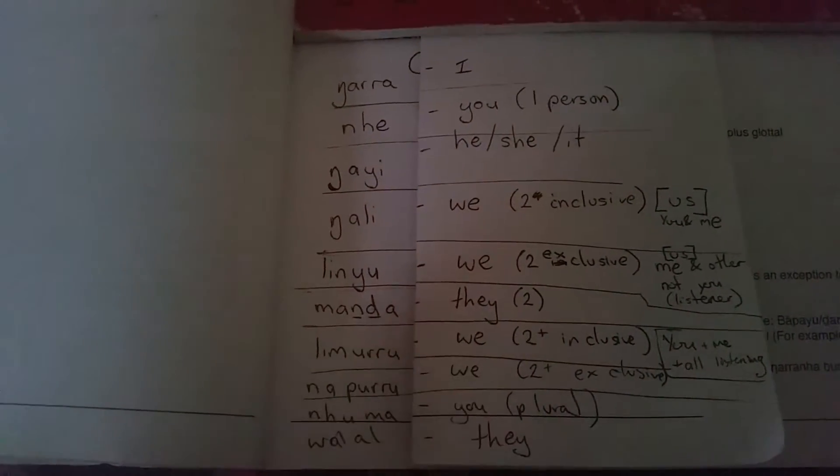So it could be the person standing next to them that you're explaining to — that you and your sister might be going somewhere but not them. 'Manda' means they, just two. Whereas if you want 'they' plural, you've got 'Wala'. And you've also got 'we' inclusive and exclusive with more than two people.